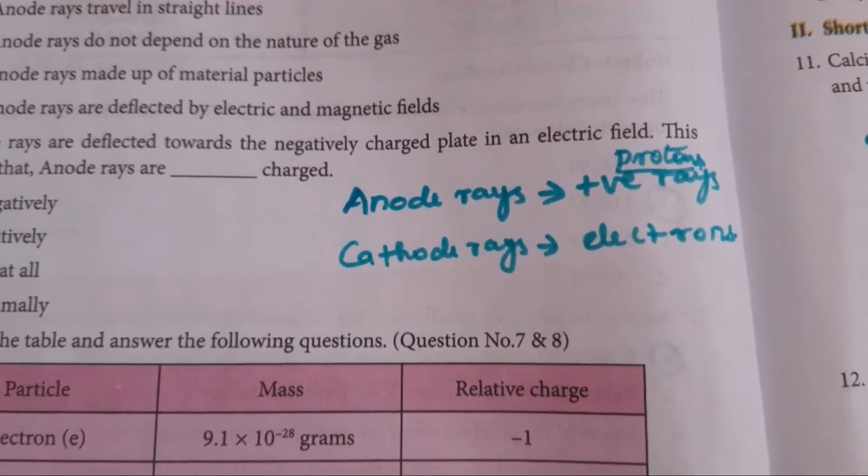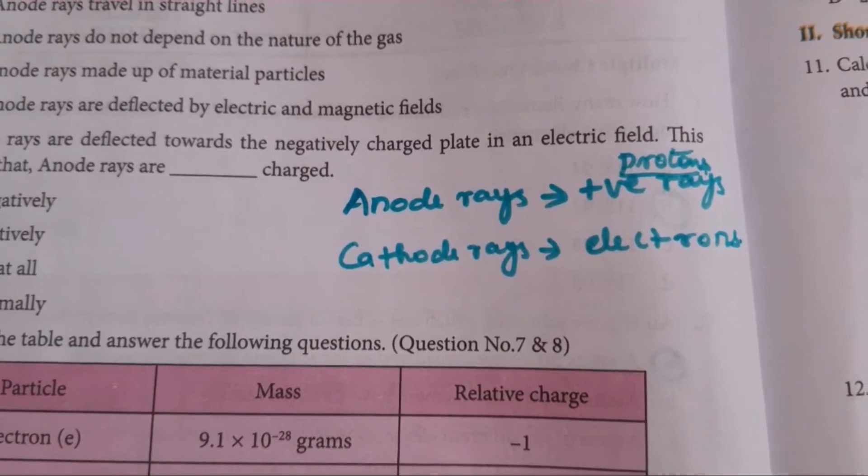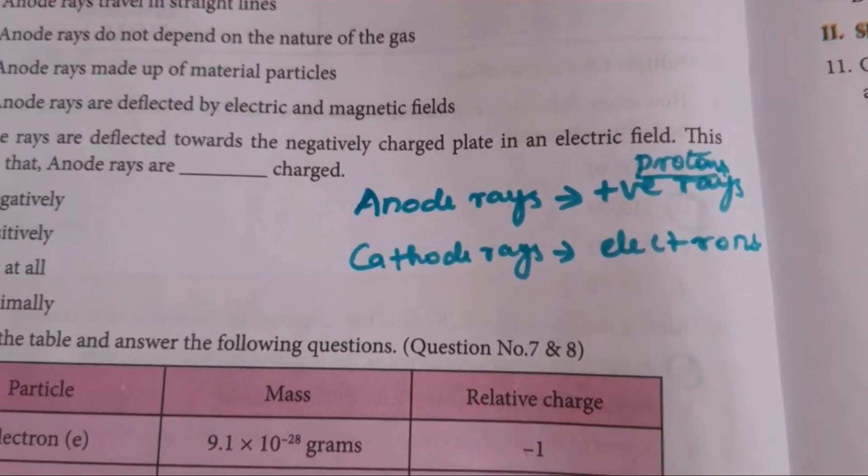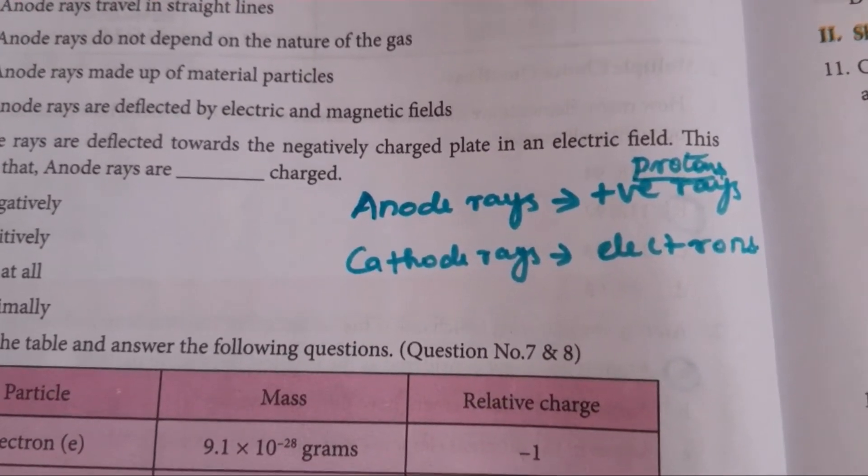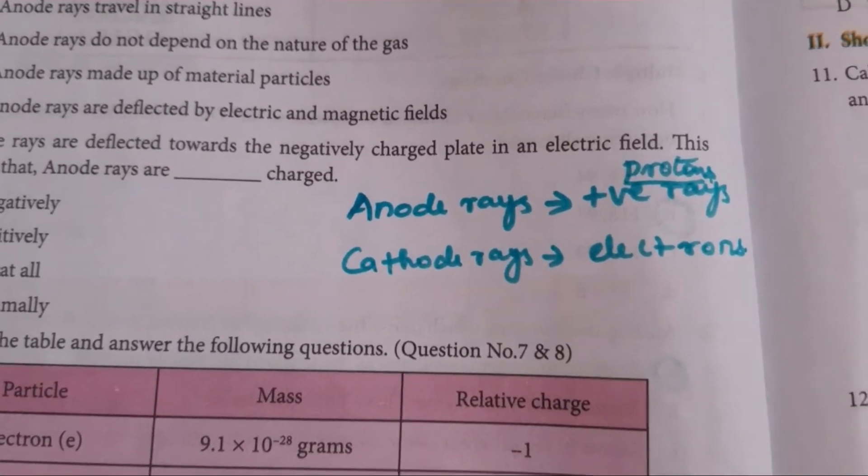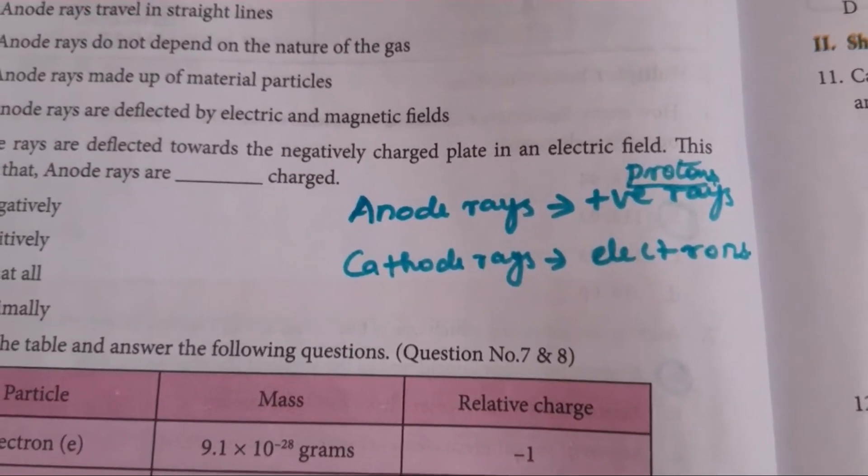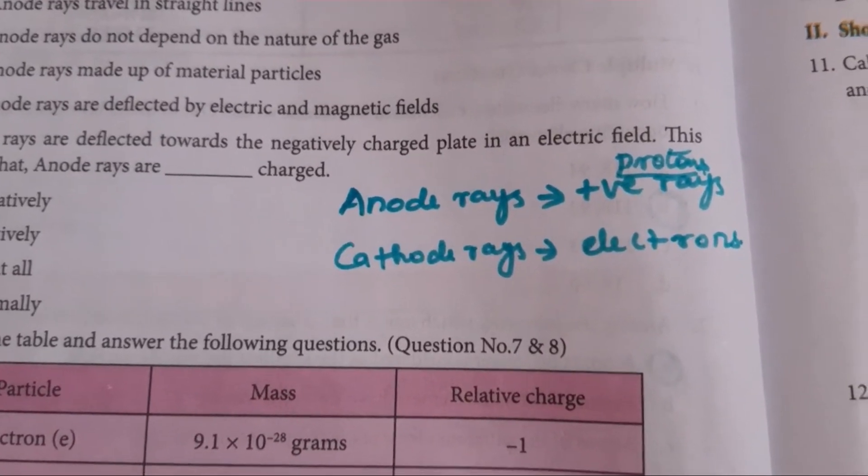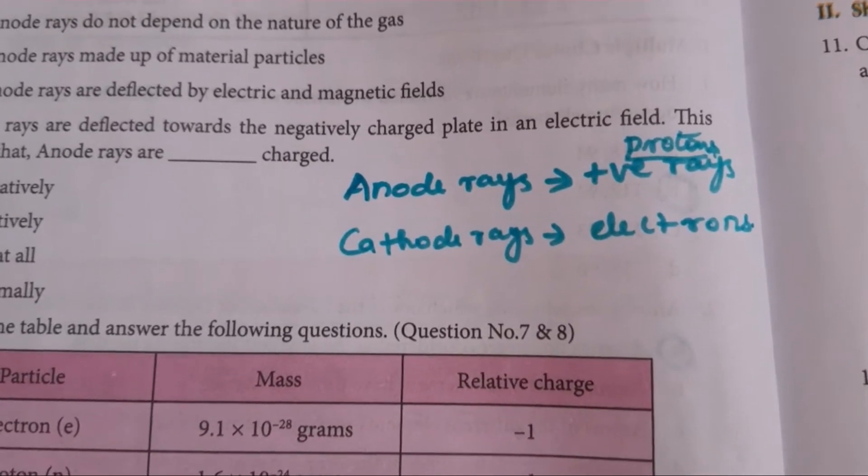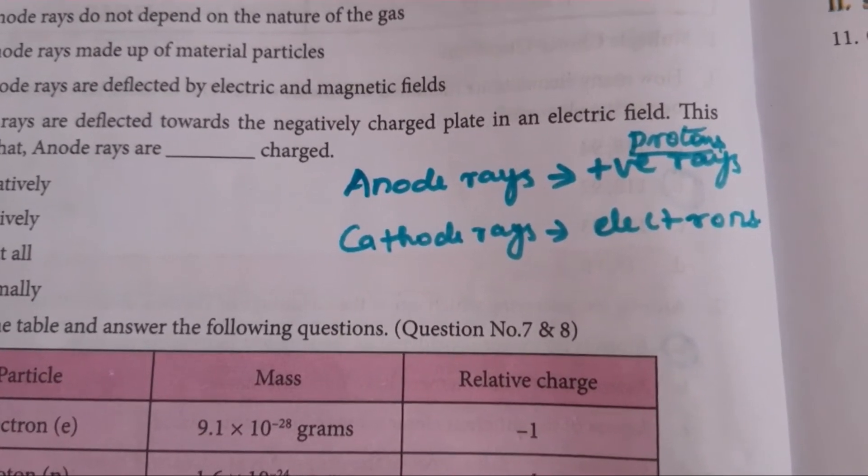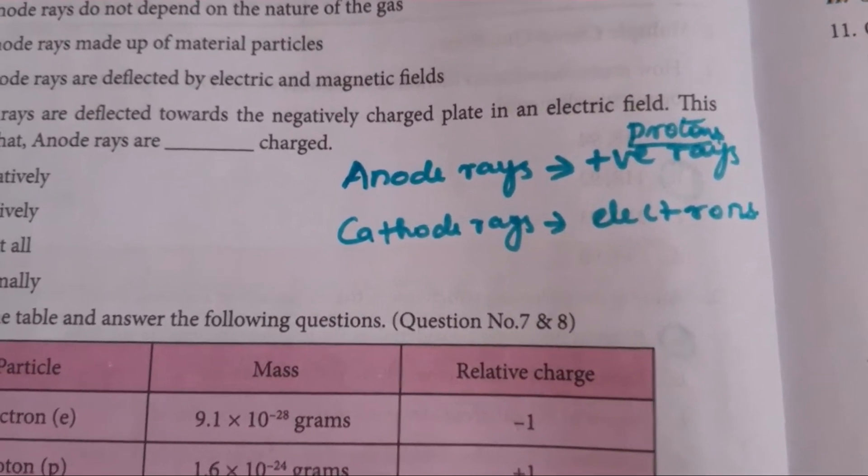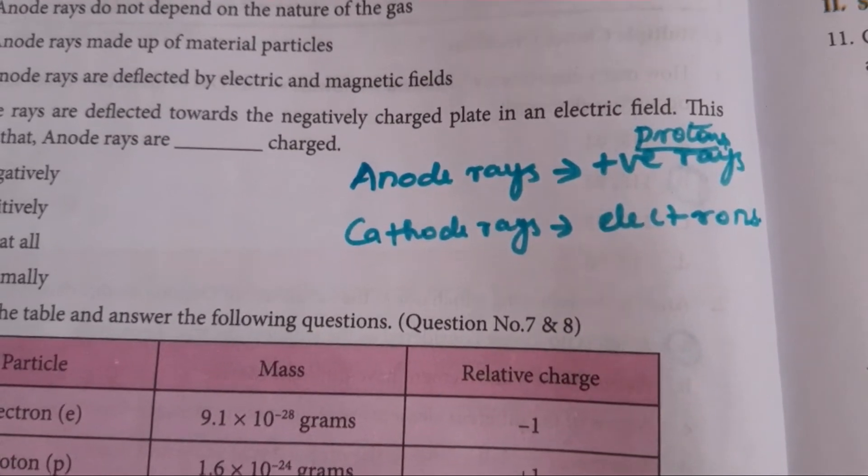Next one, anode rays are reflected towards the negatively charged particle in an electric field. This shows that anode rays are positively charged. So they are deflected towards negatively charged particle. Means they are positively charged particle only. Because opposite charges only attracted each other. So anode rays are positively charged rays. Anode rays are protons and cathode rays are negatively charged. They are electrons. So sixth one's answer is B.